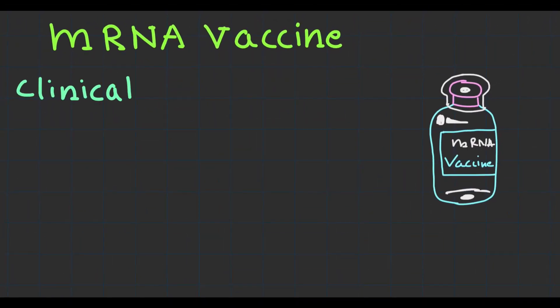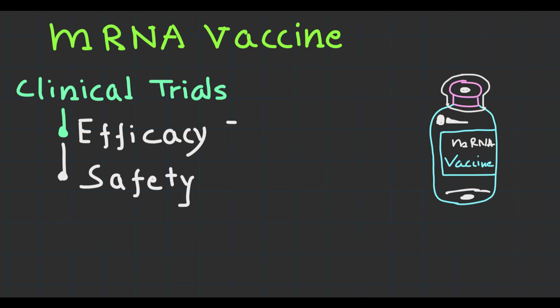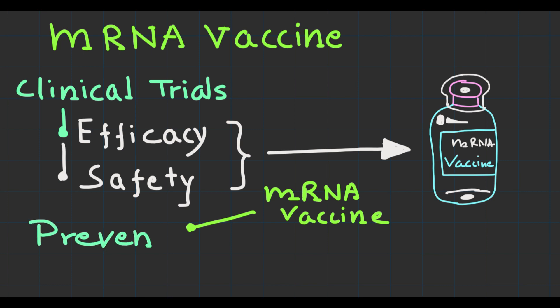The next key point is efficacy and safety of mRNA vaccines. Extensive clinical trials have demonstrated the high efficacy and safety of mRNA vaccines. For example, many current mRNA vaccines have shown remarkable effectiveness in preventing severe illness, hospitalization, and even death. These vaccines have undergone rigorous testing and have been authorized for emergency use by regulatory bodies.